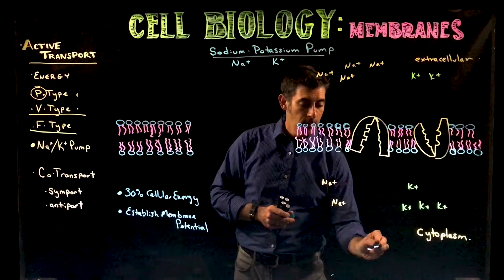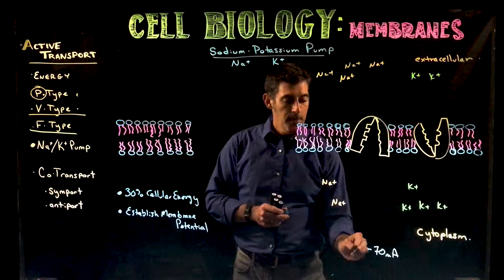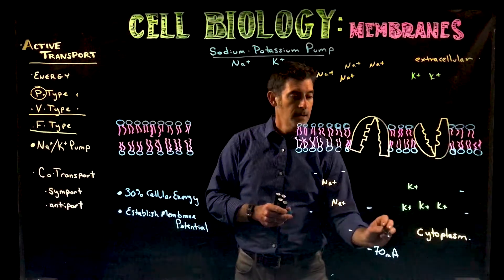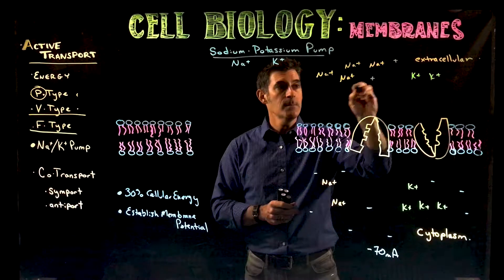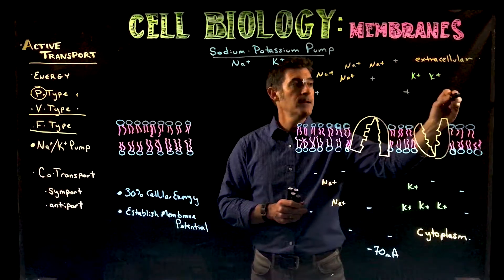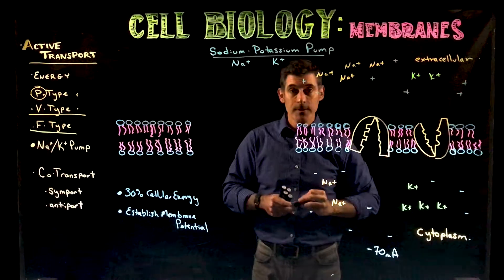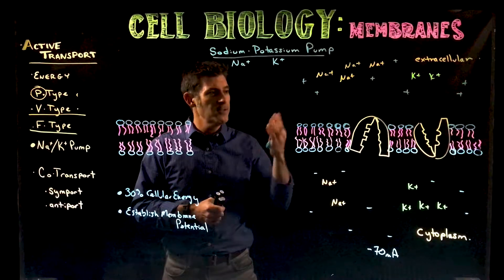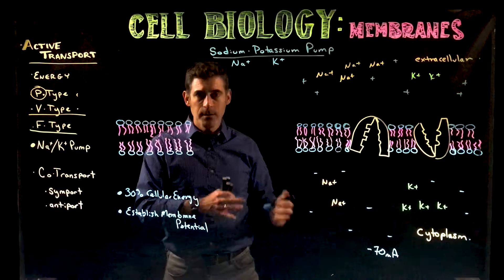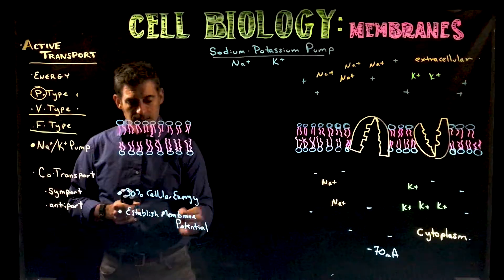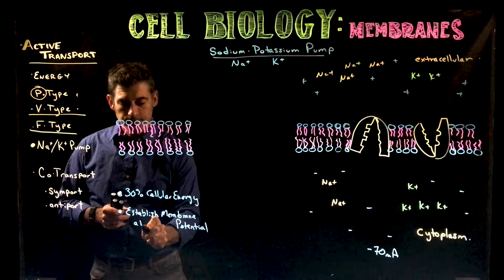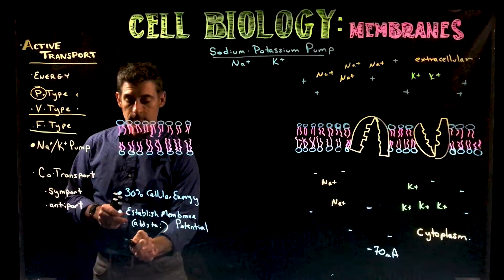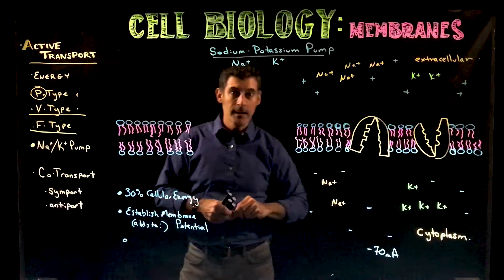Inside the cell has a negative 70 millivolt membrane potential — it's much more negative inside than outside. Outside the cell has a much more positive charge. The sodium-potassium pump contributes to this, though it is not the only cause of membrane potential — it maintains and adds to it. There are other factors involved as well.